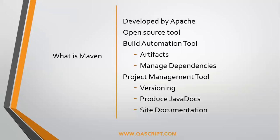Maven is also a project management tool because it helps us version our code. A project could have a number of different versions like 1.0 or 2.0, or it could be a development snapshot like 1.0-SNAPSHOT or 2.0-SNAPSHOT. This makes releasing much easier because we can release different versions of the same project and build it continuously. We can also produce documentation for our site using different plugins, and we can produce Javadocs for our source code. So there's a lot of management we can do using Maven for our projects.